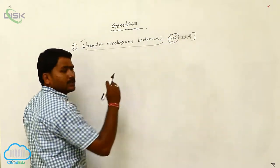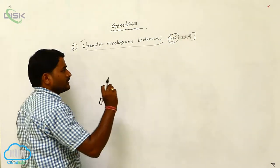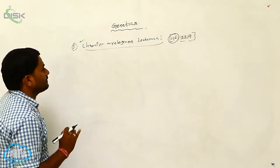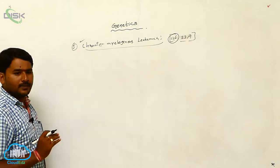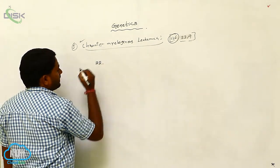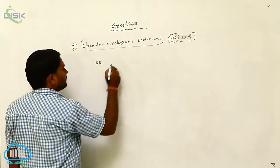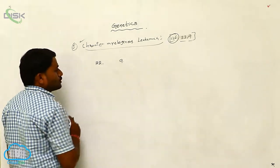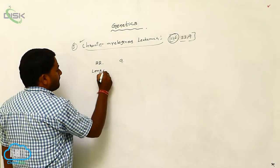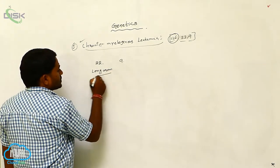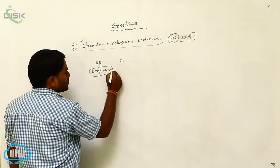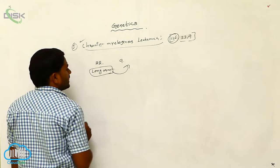The total number of chromosomes are constant. But here, what is happening in chronic myelogenous leukemia? If you take the 22nd pair chromosome and the 9th pair chromosome, the long arm of the 22nd pair chromosome will go toward the 9th one.